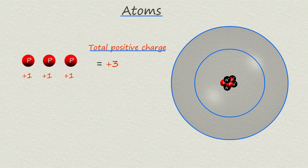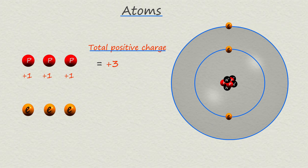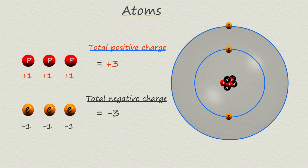In atoms, for every proton there is one electron present, so this means that this atom will contain three electrons. These three electrons will go into the electron shells or energy levels, with two electrons going into the first shell and one electron going into the second shell. Each electron has a negative charge, so the total negative charge in the atom from these three electrons is minus three.